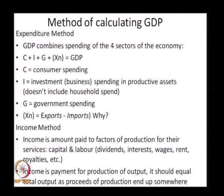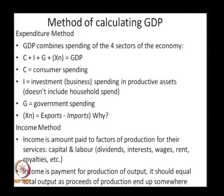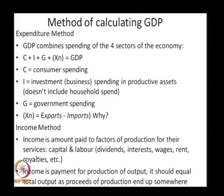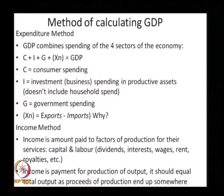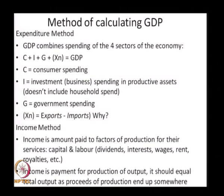How do we calculate the GDP of a country? There are different methods. The first method is the expenditure method, which calculates the end value of goods or services being delivered instead of calculating the value addition at each stage. In this expenditure method, expenditure on final goods and services is divided into five groups, which are combined in calculating the GDP.